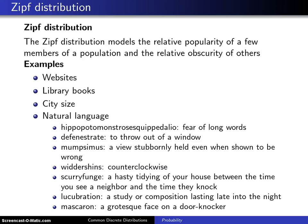The third niche discrete distribution covered in this section is known as the Zipf distribution. The Zipf distribution models the relative popularity of a few members of a population and the relative obscurity of others.